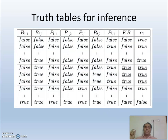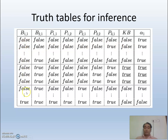For example, with seven propositional symbols — B(1,1), B(2,1), P(1,1), P(1,2), P(2,1), P(2,2), P(3,1) — the truth table has 2⁷ = 128 rows. Whenever the knowledge base is true and alpha is true in the same row, that constitutes entailment. However, generating 128 rows is already challenging. This is the enumeration problem.